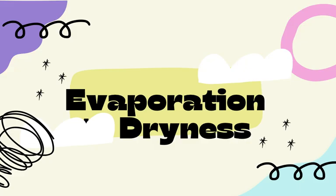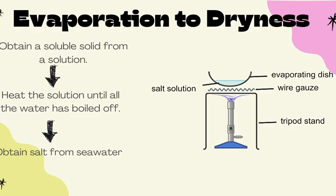Let us look at the second method, called evaporation to dryness. In this separating technique, we are trying to get a soluble salt from a solution. Basically, you are just heating the water to cause it to evaporate. You heat the solution until all the water has been boiled off, and what you have will be the solid.